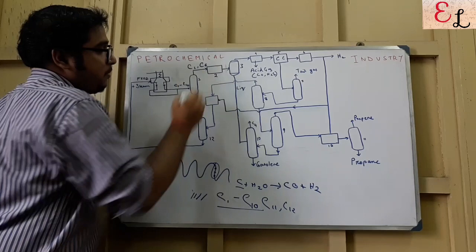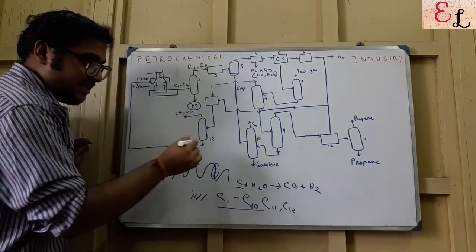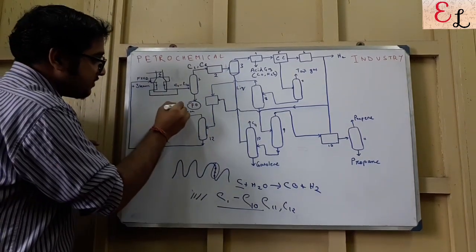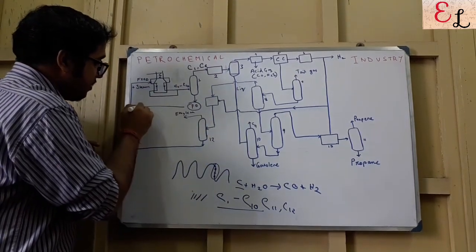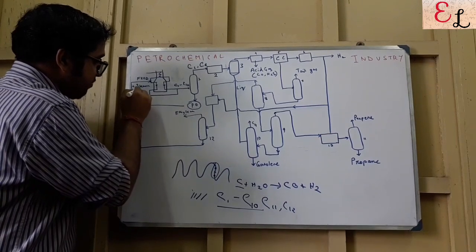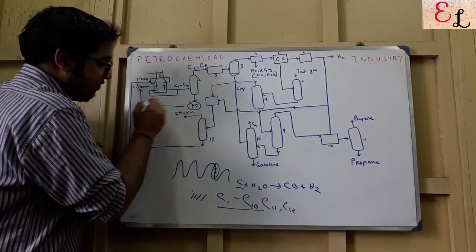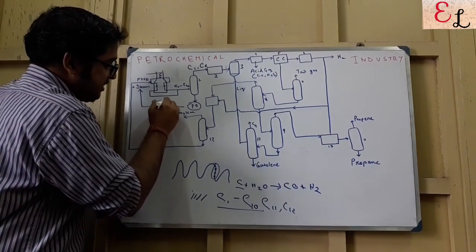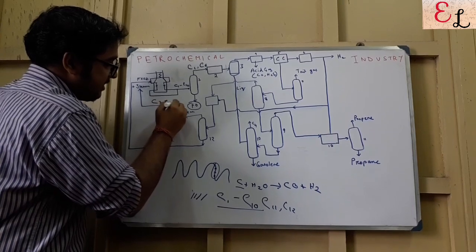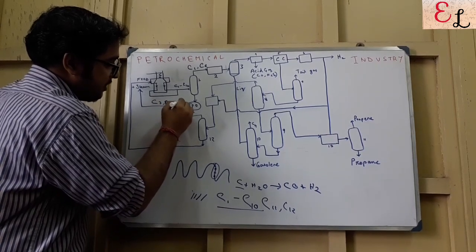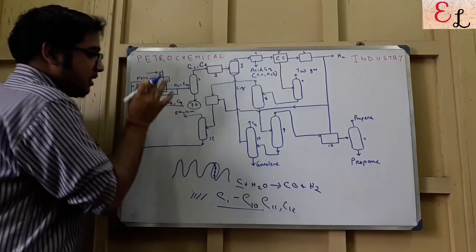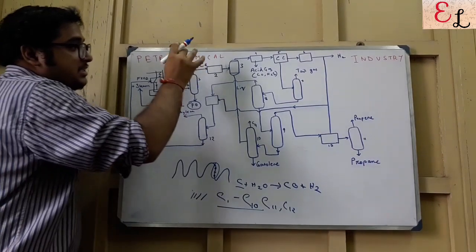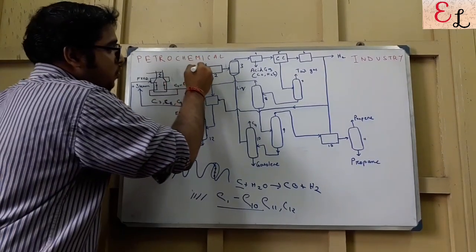What goes forward is basically C1 to C6. C7, C8, and C9 are further separated from the quail oil and transferred back — recycled back — to the feed stream. C7, C8, and C9 are separated and sent back to the feed stream.